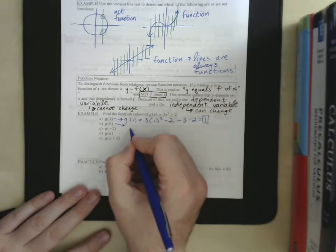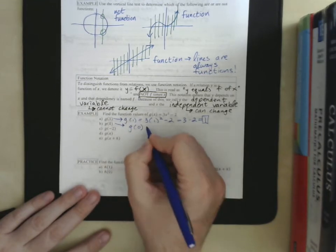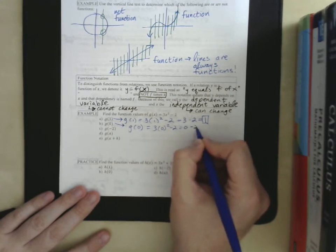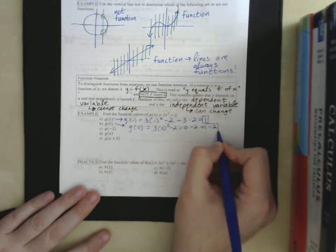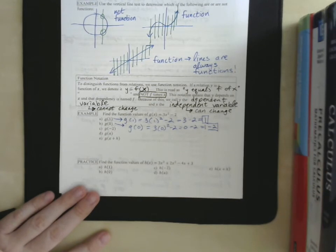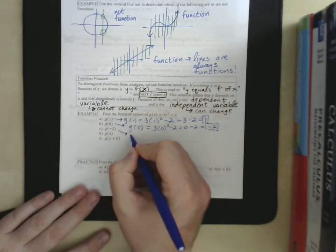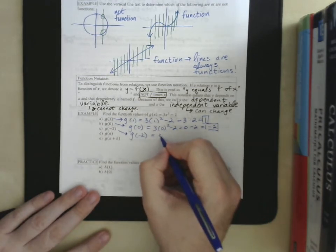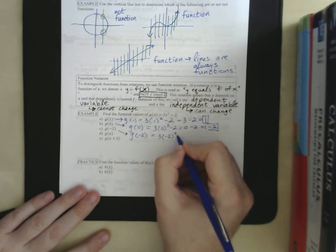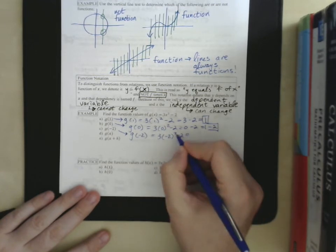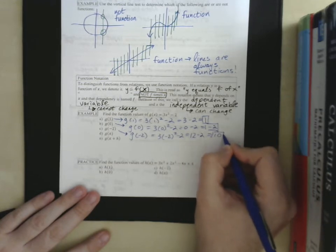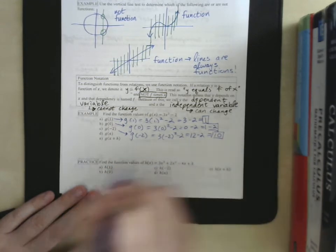For b, we have g of 0, 3 times 0 squared minus 2, this is 0 minus 2, or negative 2. So, our function value, g of 0, equals negative 2. g of negative 2, 3 times negative 2 quantity squared minus 2. Negative 2 squared is 4, times 3 is 12, minus 2, equals 10. So, g of negative 2 equals 10.